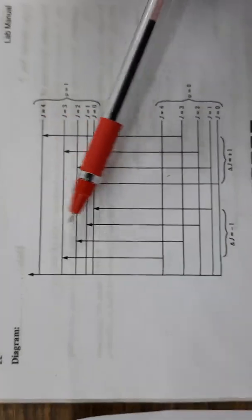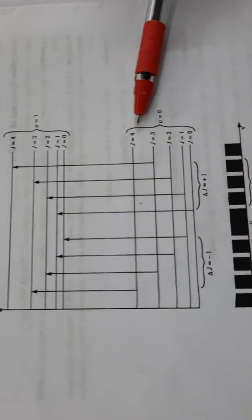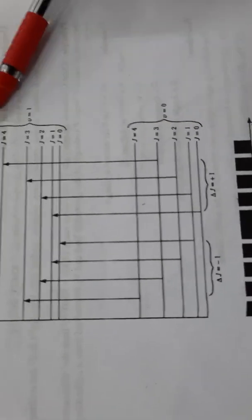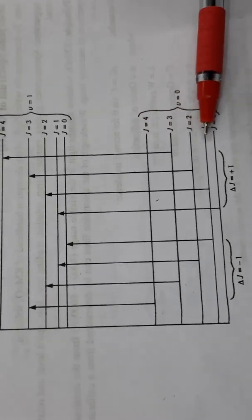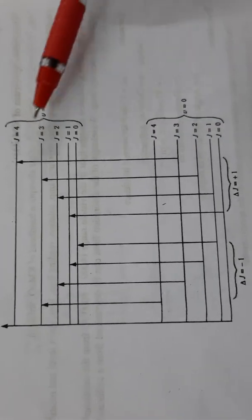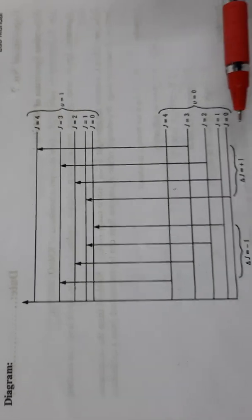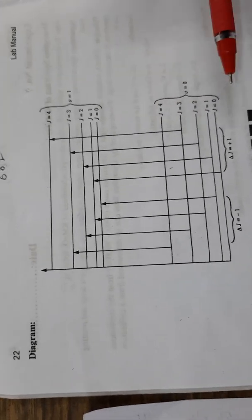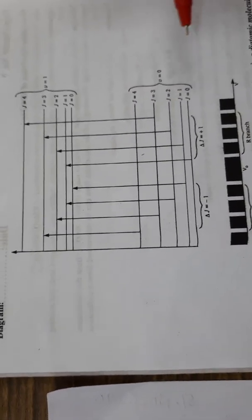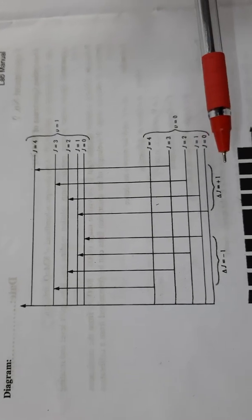This is the energy level diagram for vibrational and rotational motions of the molecule. This band corresponds to the lower vibrational state and this corresponds to the higher vibrational state. Within each vibrational state there are quantized rotational energy levels also. The transitions among these different rotational energy states is governed by one selection rule: delta J is equal to plus or minus 1.